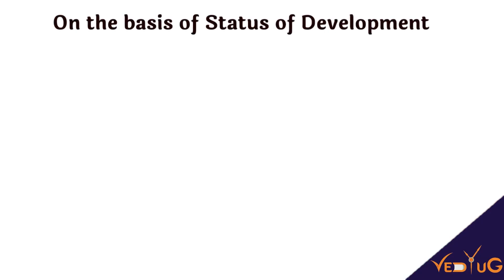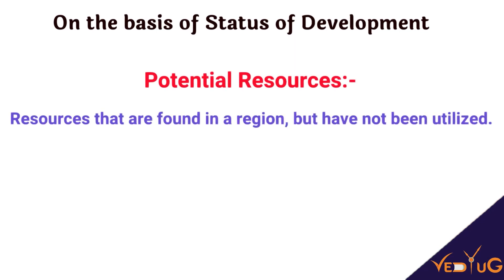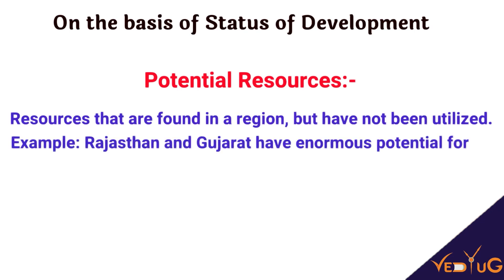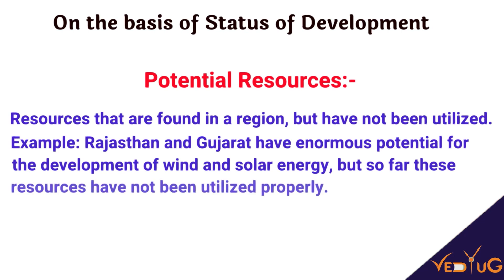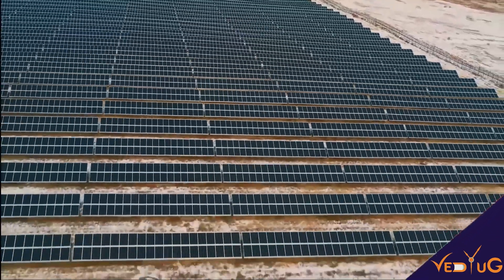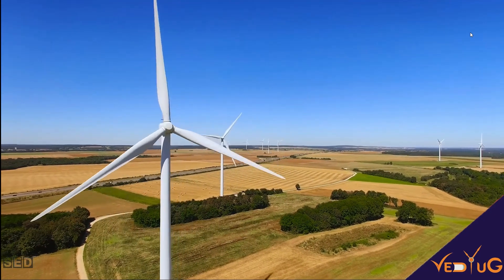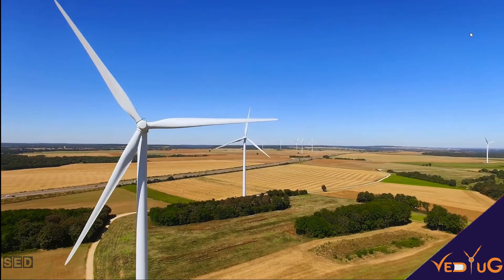On the basis of development, there are four types of resources: potential resources, developed resources, stock, and reserve. Potential resources are found in a particular region but have not been utilized yet. For example, the Thar Desert in Rajasthan has enormous potential for solar energy, and wind also flows there which could generate wind energy, but we have not utilized it till date.